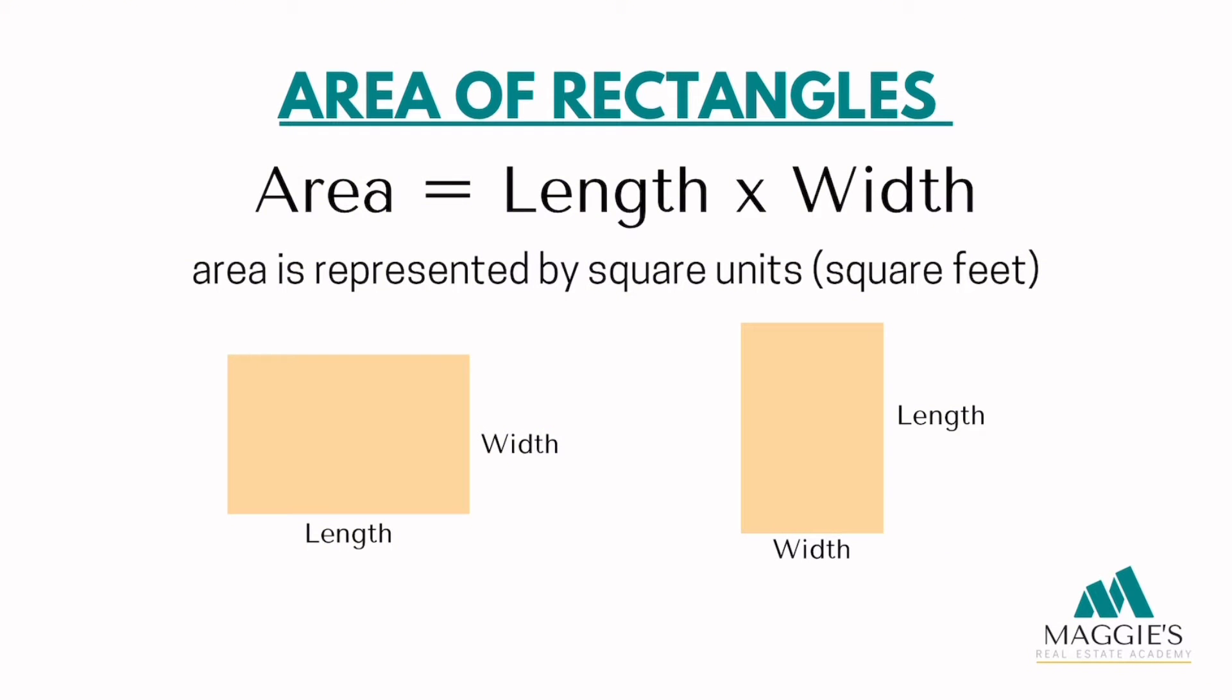Before we dive into calculations, let's understand what exactly area represents. In real estate, area refers to the amount of space inside a given shape or property. It's an essential measurement for determining property size and value. This is why homes are measured in area or square feet here in the US because it determines the amount of space we have inside our home. Now let's unveil the area formula that can be applied to rectangles and squares. The formula is as follows: Area equals length times width. Keep in mind that the specific formulas for squares and triangles will vary slightly, but we'll cover those shortly.